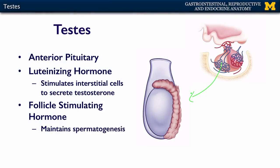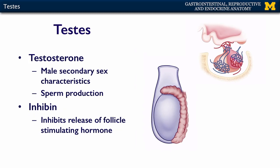Follicle stimulating hormone acts on the testes and stimulates spermatogenesis, or sperm production. Testosterone is responsible for male secondary sex characteristics and sperm production. Those characteristics include a deeper voice, enlargement and more prominent thyroid cartilage, increased musculature and strength, more dense and bigger bones, and facial hair.